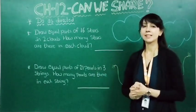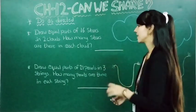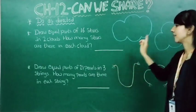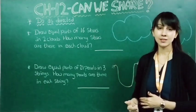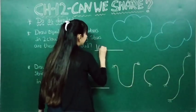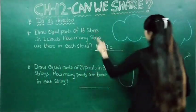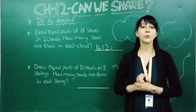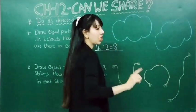Now students, let's do an exercise. Draw equal parts of sixteen stars in two clouds. How many stars are there in each cloud? Here you can see two clouds are there. We have to draw sixteen stars in two clouds in equal parts. So with the help of division, sixteen divided by two — because sixteen stars are there and two clouds are there. Where does sixteen come in the table of two? Two eights are sixteen. So here it will come eight. In each cloud we will draw eight stars.